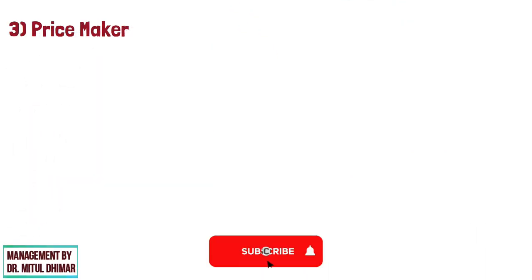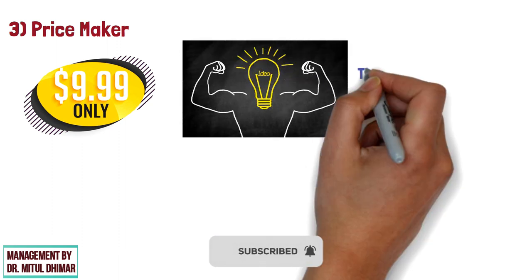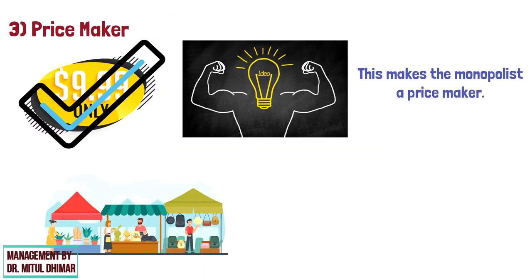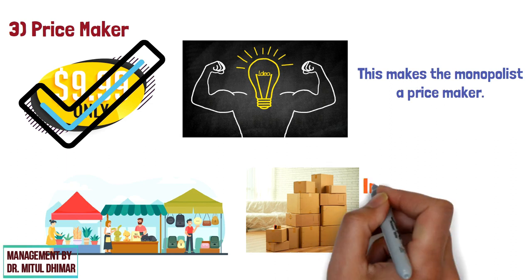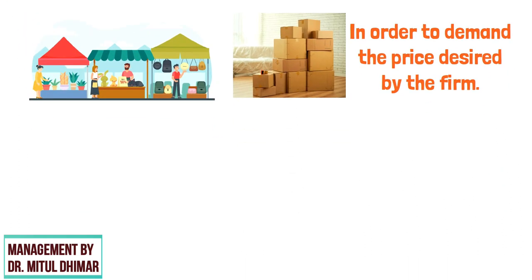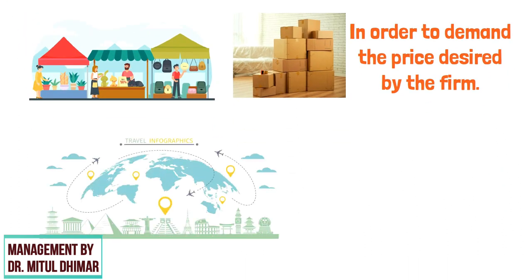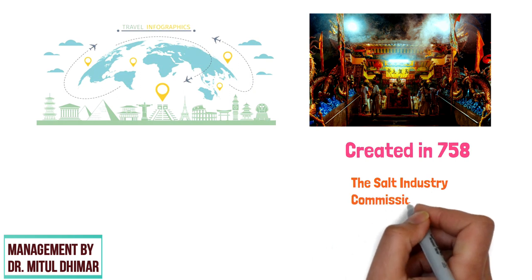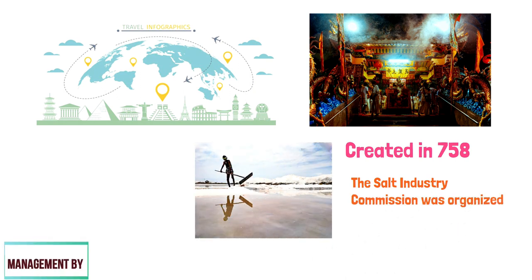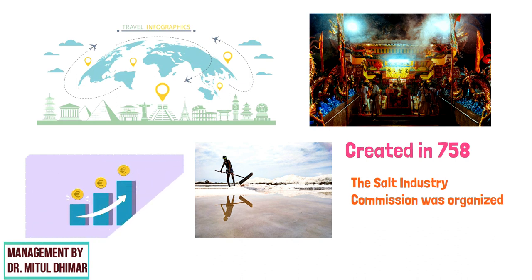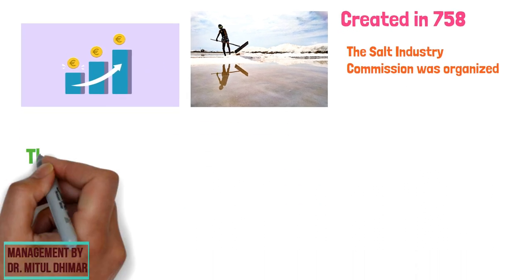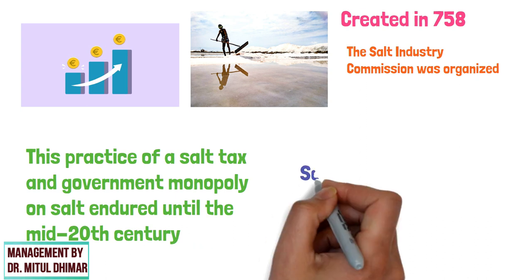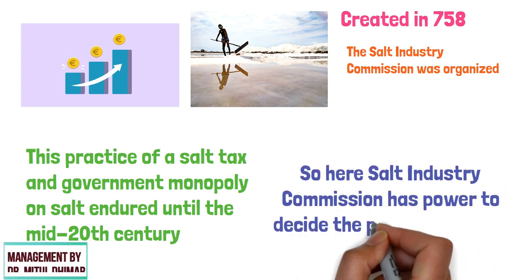Price Maker: the monopolist decides the price of the product since it has market power, which makes the monopolist a price maker. The monopoly decides the price of the good or product to be sold, but does so by determining the quantity in order to demand the price desired by the firm. Monopolies date all the way back to the ancient world. The Tang Dynasty in China, in 758, created the Salt Industry Commission, which was organised to sell salt to private merchants and effectively raised tax revenue from a state monopoly on the salt trade. This practice of a salt tax and government monopoly on salt endured until the mid-20th century, giving the Salt Industry Commission the power to decide the price of salt.